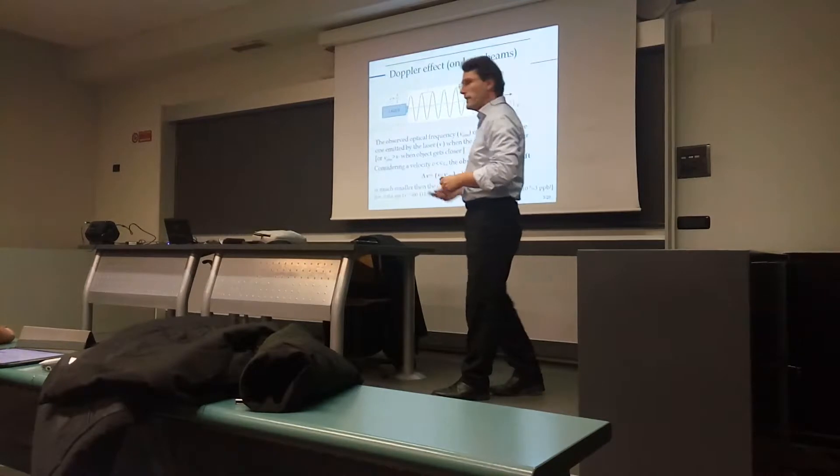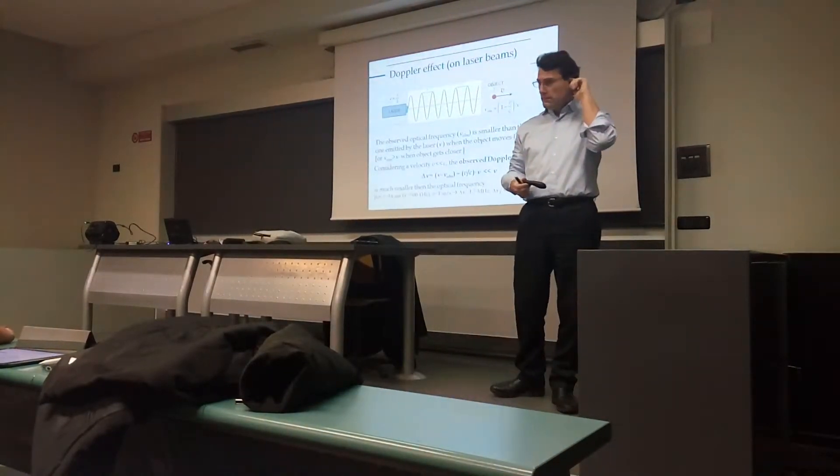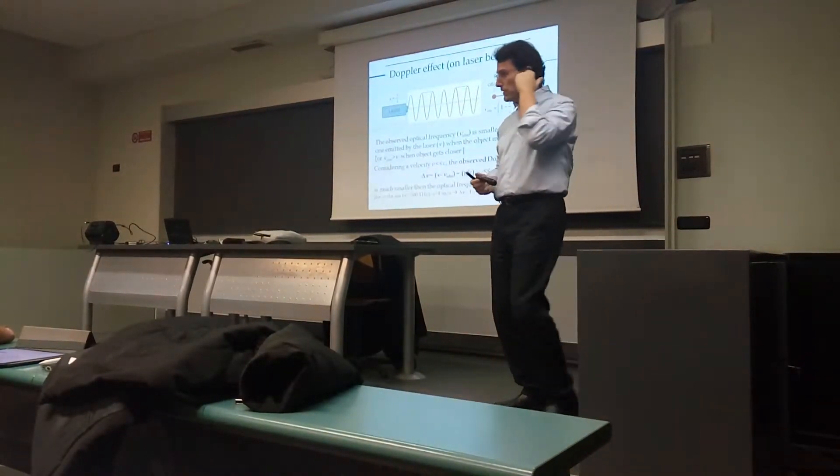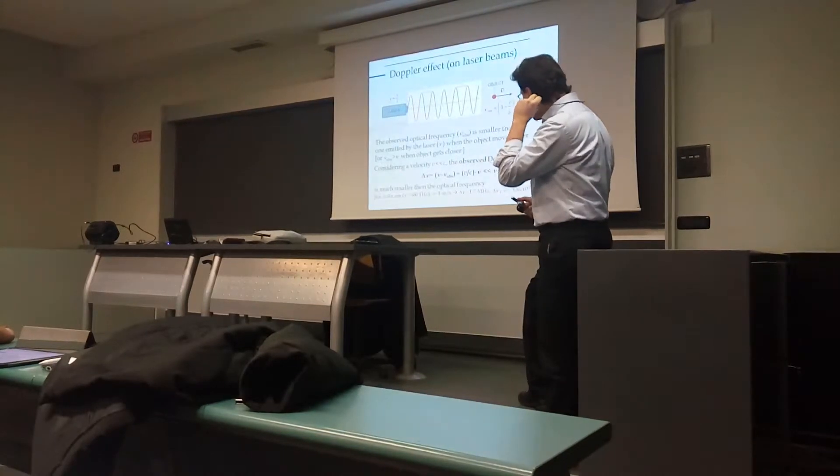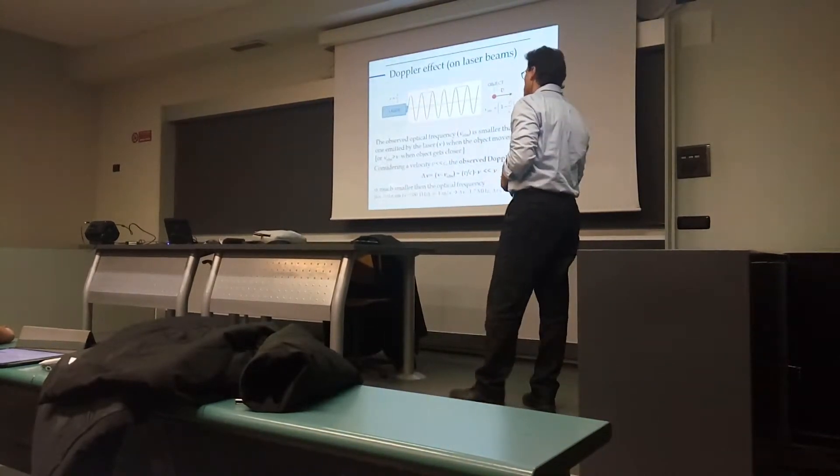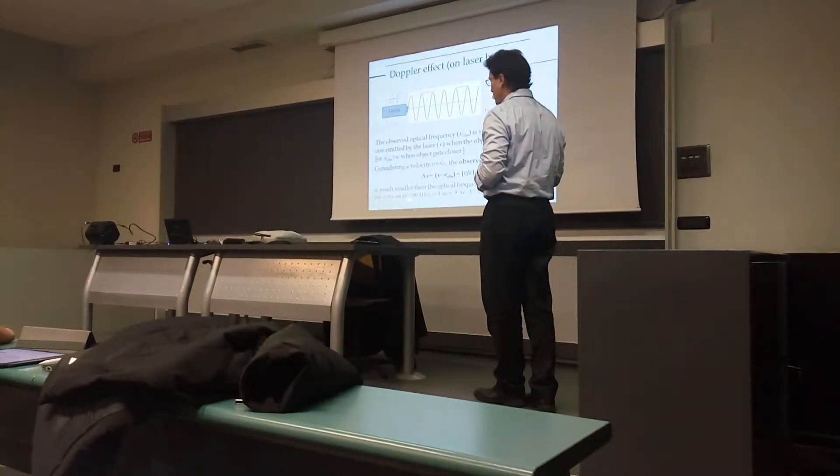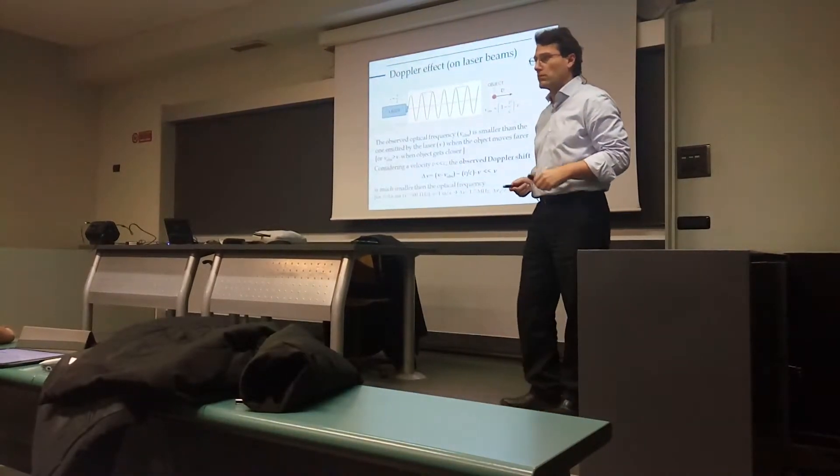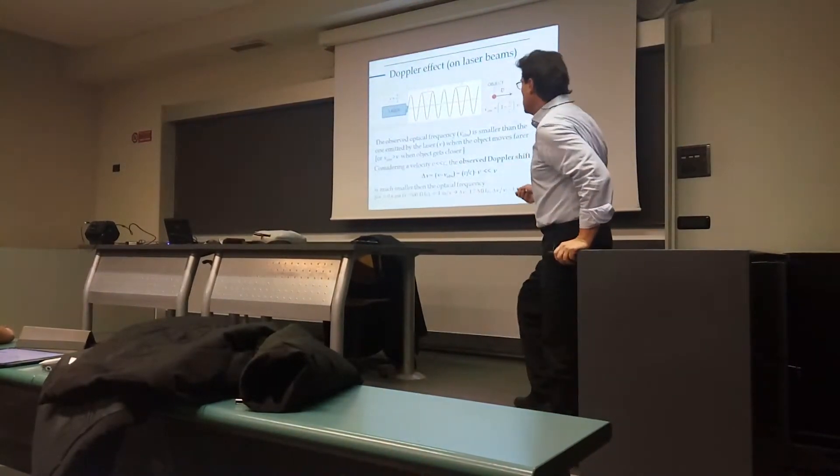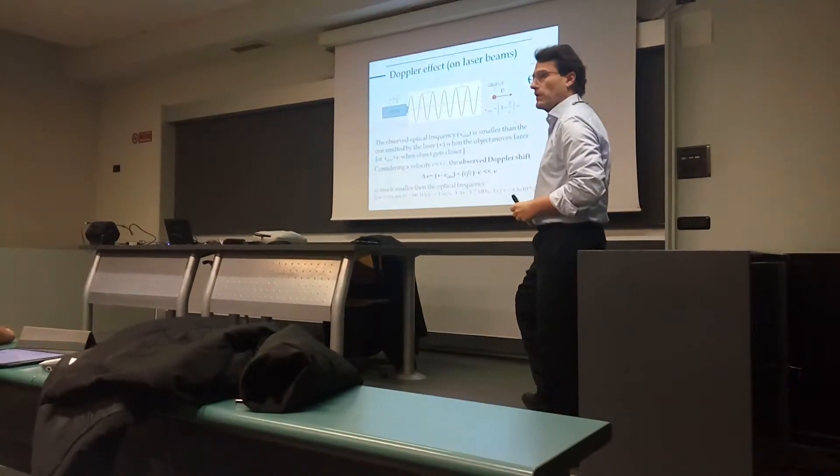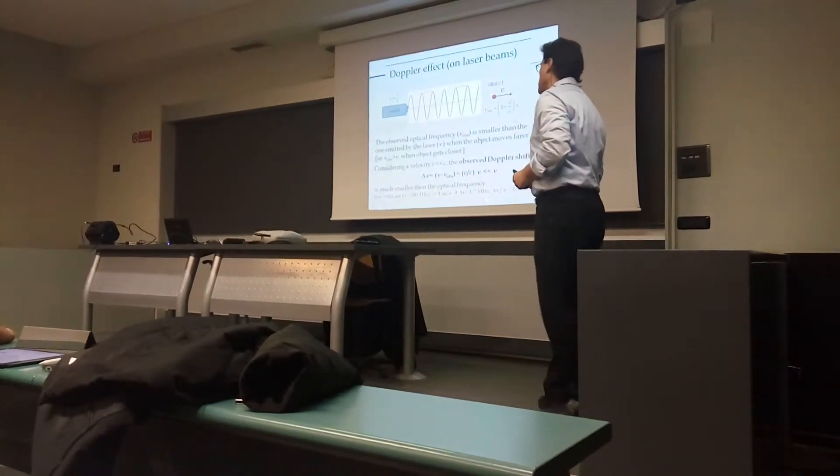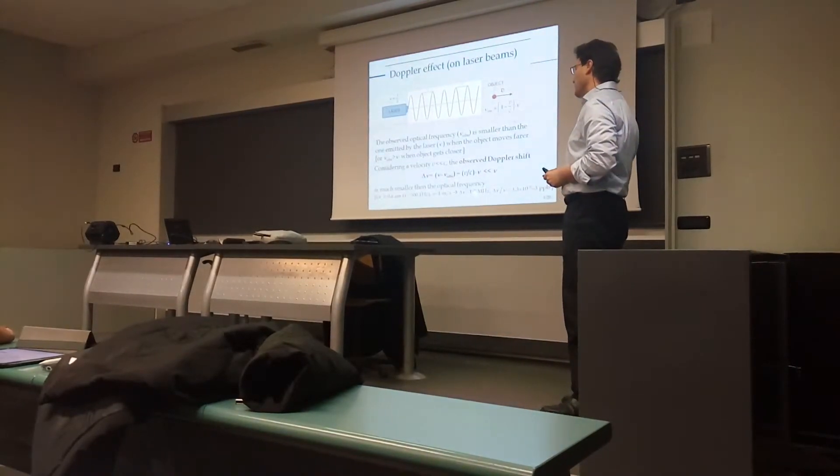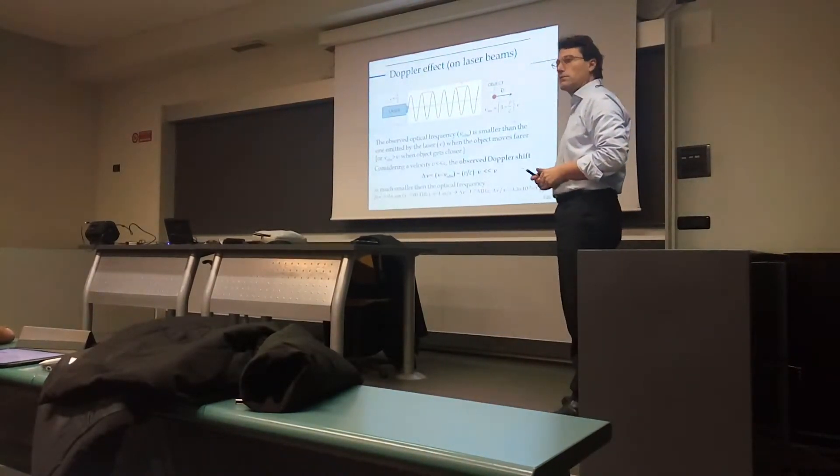if you are using a neon laser with lambda typically 0.6 micrometer, 633 nanometers, this means this wavelength means a frequency of 500 Terahertz in vacuum or in air. And with a target, with an object moving at 1 meter per second, we will observe a Doppler shift delta E of approximately 2 megahertz.